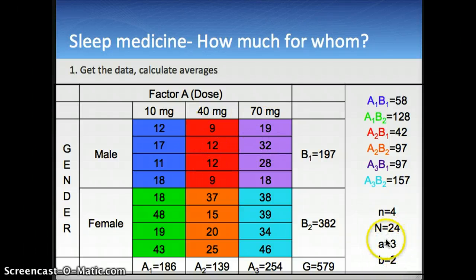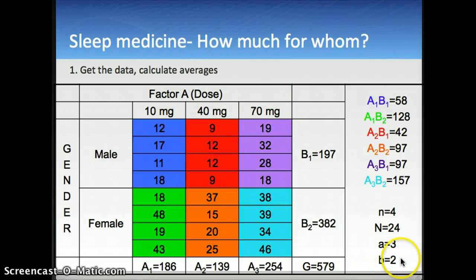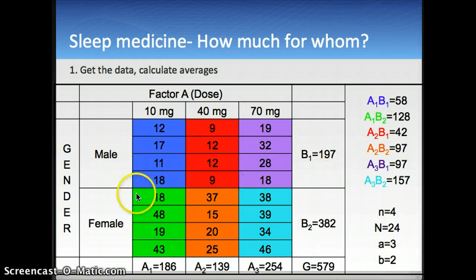The number of levels in factor A was 3 (10mg, 40mg, 70mg), and the number of levels in factor B was 2 (male and female).